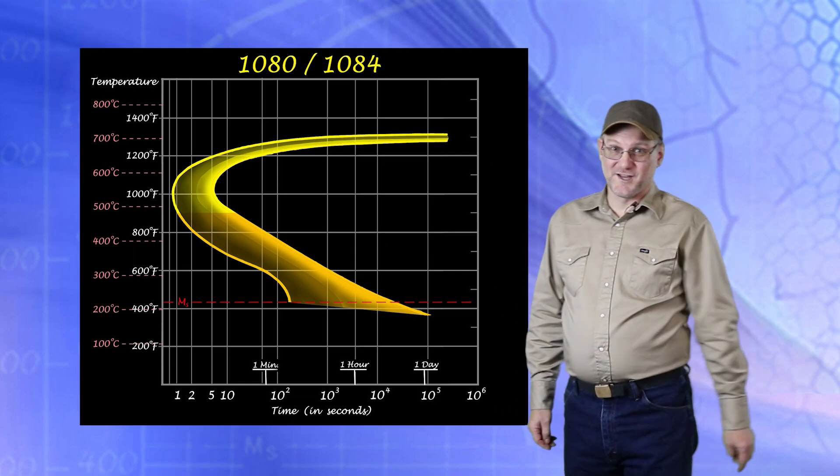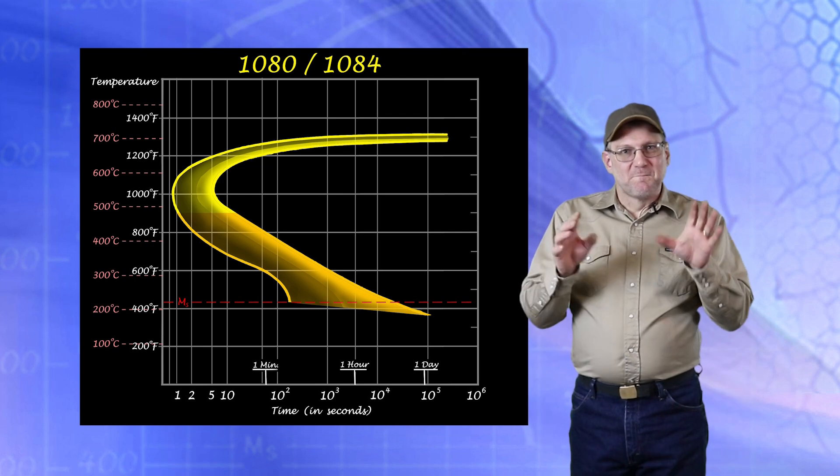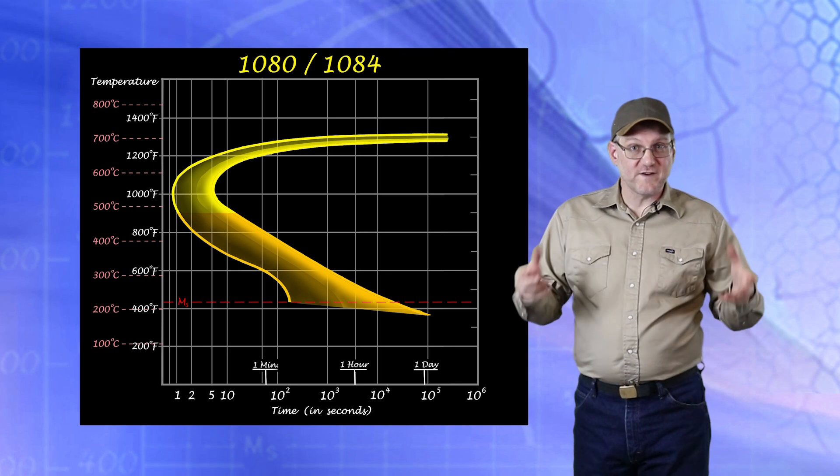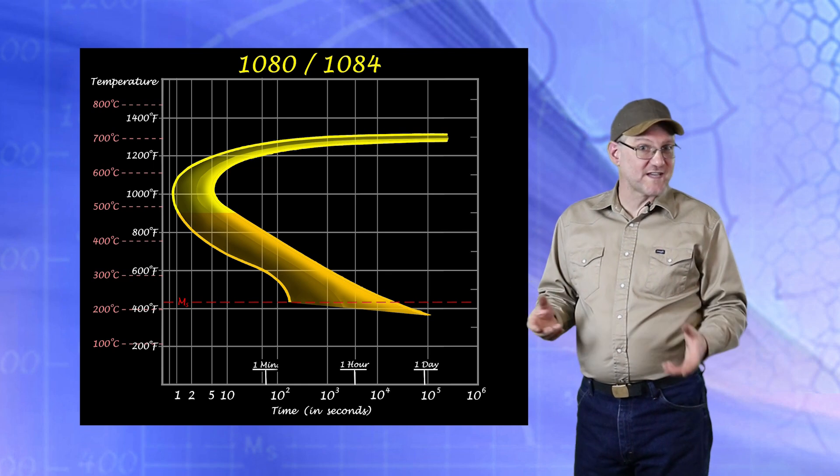Here's another one of those charts, but as a tool this one is the key for heat treating the steel that it describes. While the iron-iron carbide phase diagram told us what phases different carbon levels gave us at different temperatures, this diagram adds the critical factor of time.